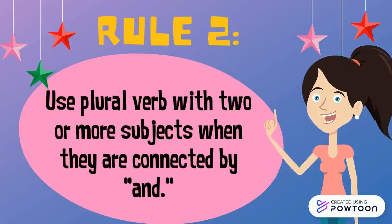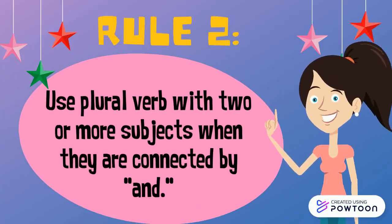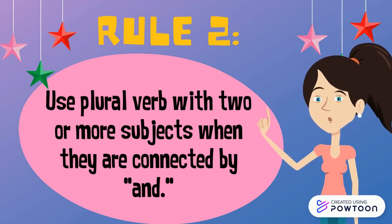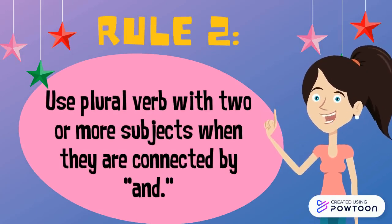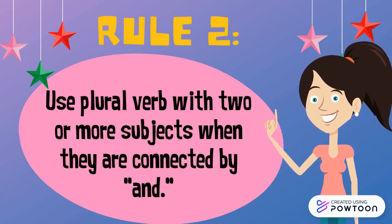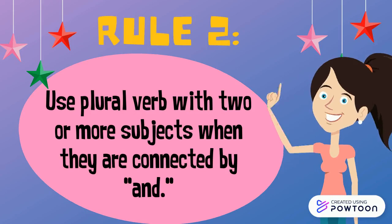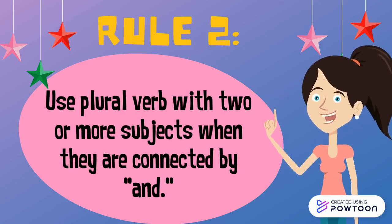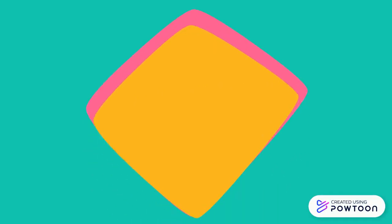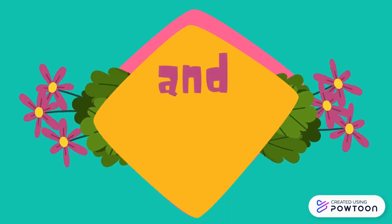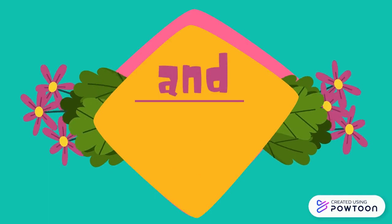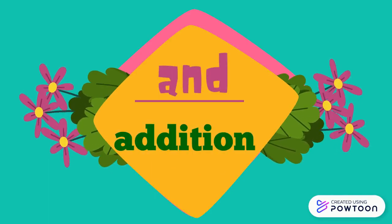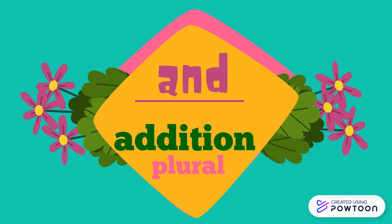Rule number two. Use a plural verb with two or more subjects when they are connected by the word 'and'. The word 'and' is used when there is an additional subject, thus making the subject plural.